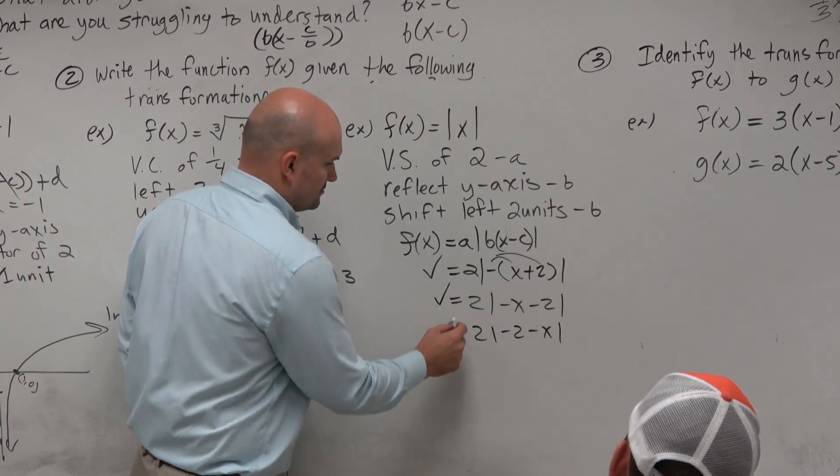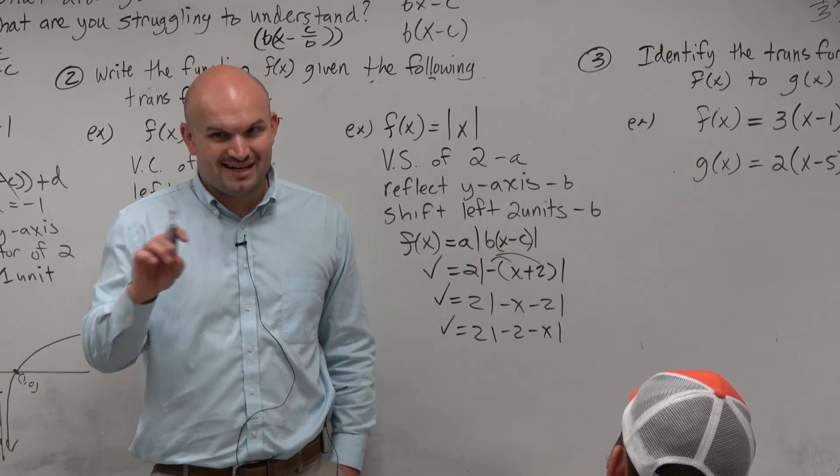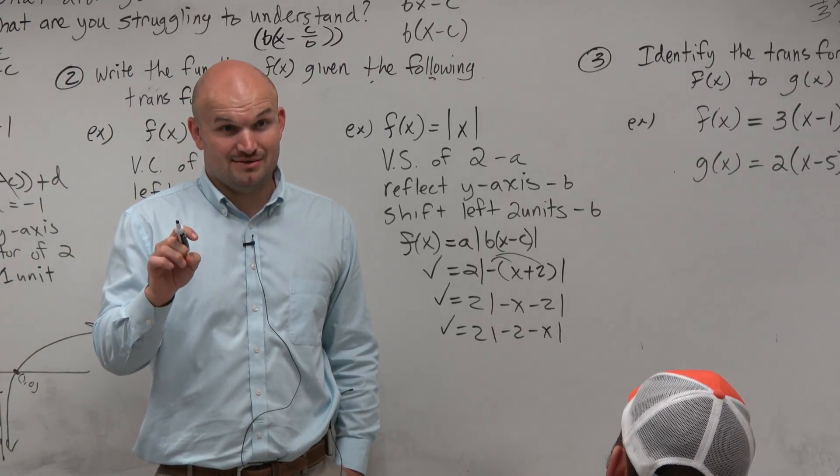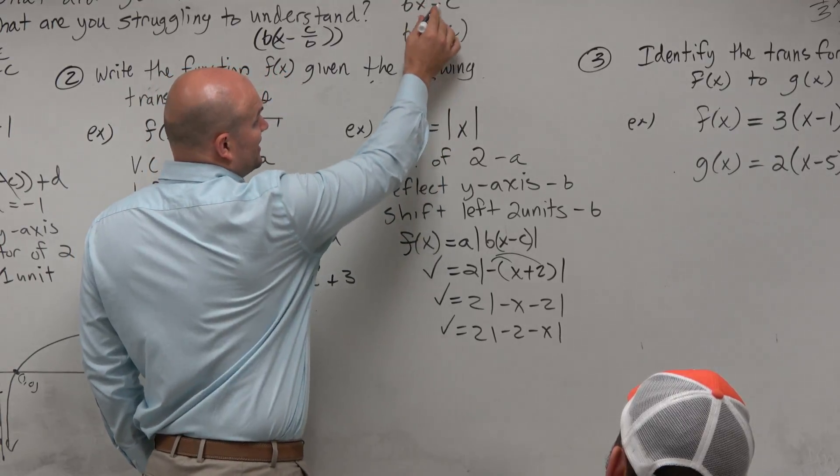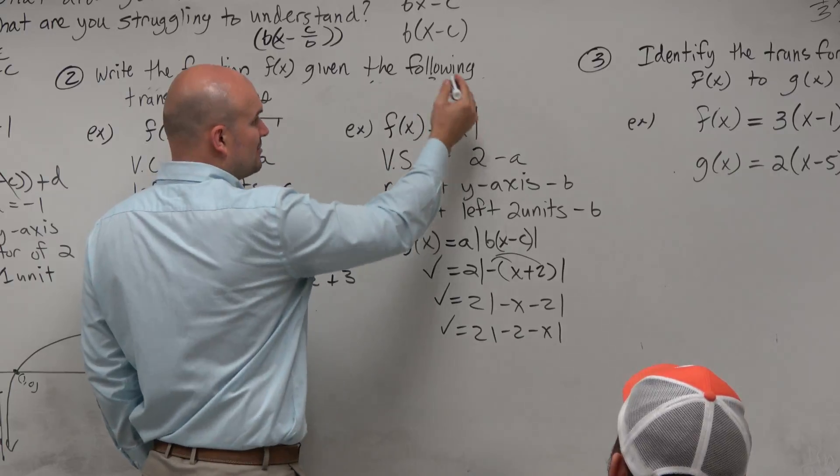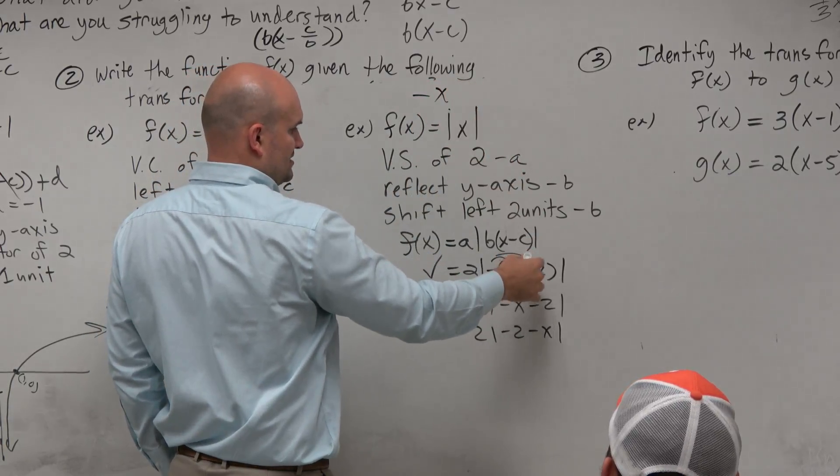If you gave me any one of those answers, you'd be correct. But guess what the number one mistake students are going to make? They're going to plug it in without the parentheses, and they're going to plug it in like this. Negative x, negative x plus 2.